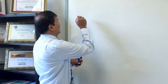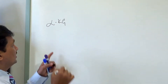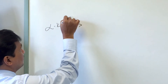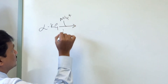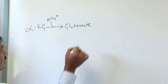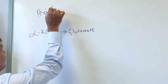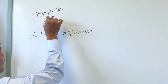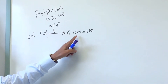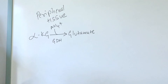In the peripheral tissue, ammonium ion is fixed to alpha-ketoglutarate — a TCA cycle intermediate. Alpha-ketoglutarate takes up one NH4+ ammonium ion to make glutamate. This reaction is carried out by glutamate dehydrogenase enzyme.